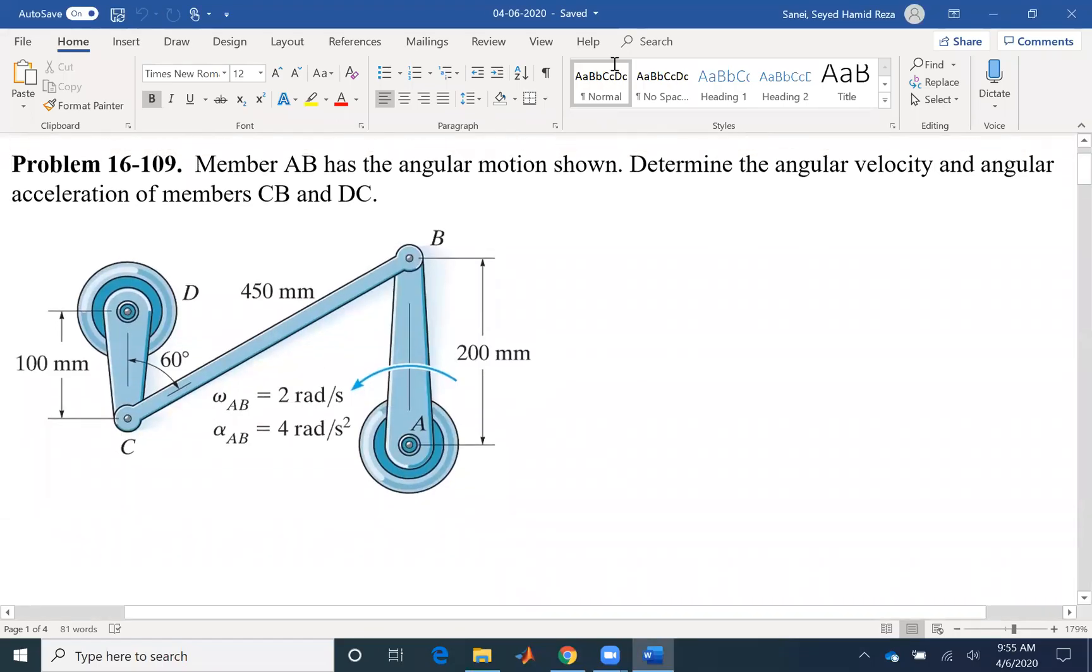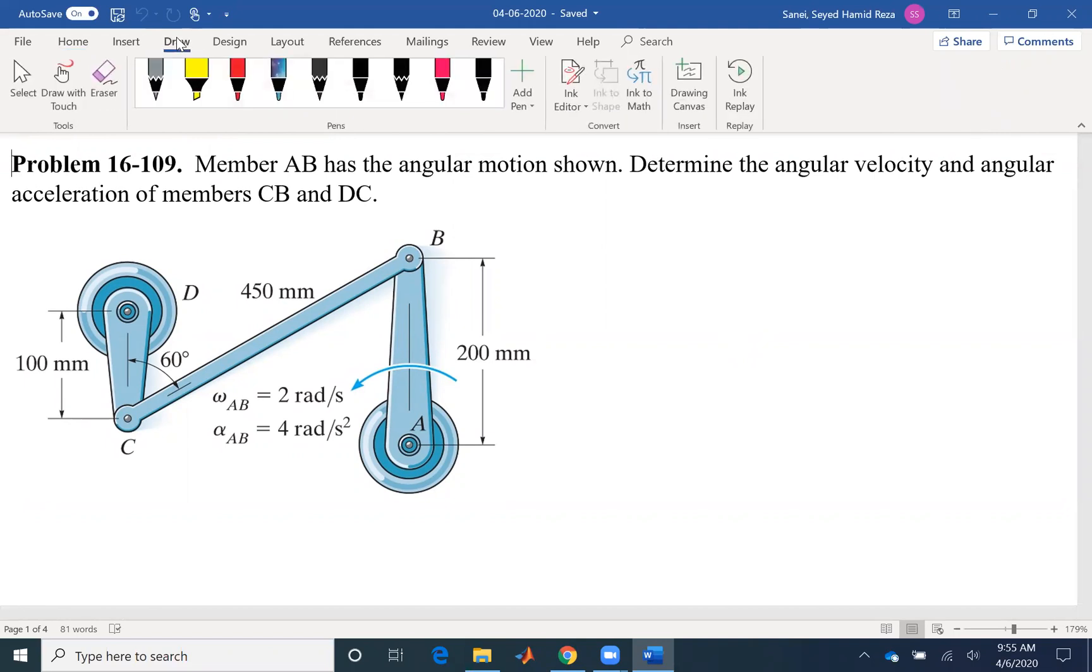Hello everyone. Today we'll be solving problem 109 of chapter 16. Member AB has the angular motion shown. For member AB we have both angular velocity and angular acceleration, which means we have information about point B. We have the velocity of point B and also the acceleration of point B. Determine the angular velocity and angular acceleration of members CB and DC.